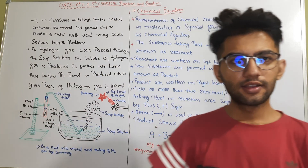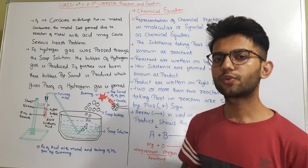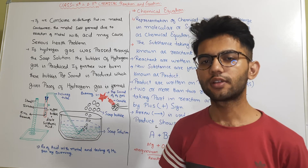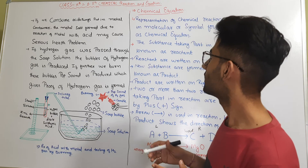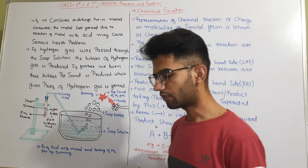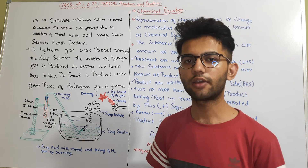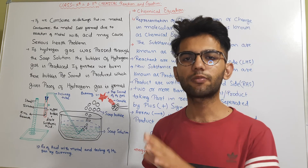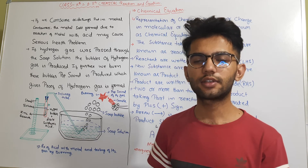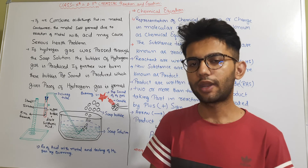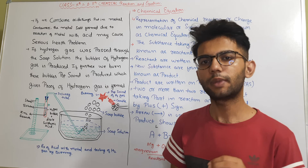Hello, hi guys. In the last class we covered the introduction of the first chapter: chemical reactions and equations. Now we will continue further. The topic left uncompleted was the reactivity of metal with an acid. When a metal reacts with an acid, it produces a salt of the metal along with hydrogen gas, which is in gas form and is liberated out of the solution.